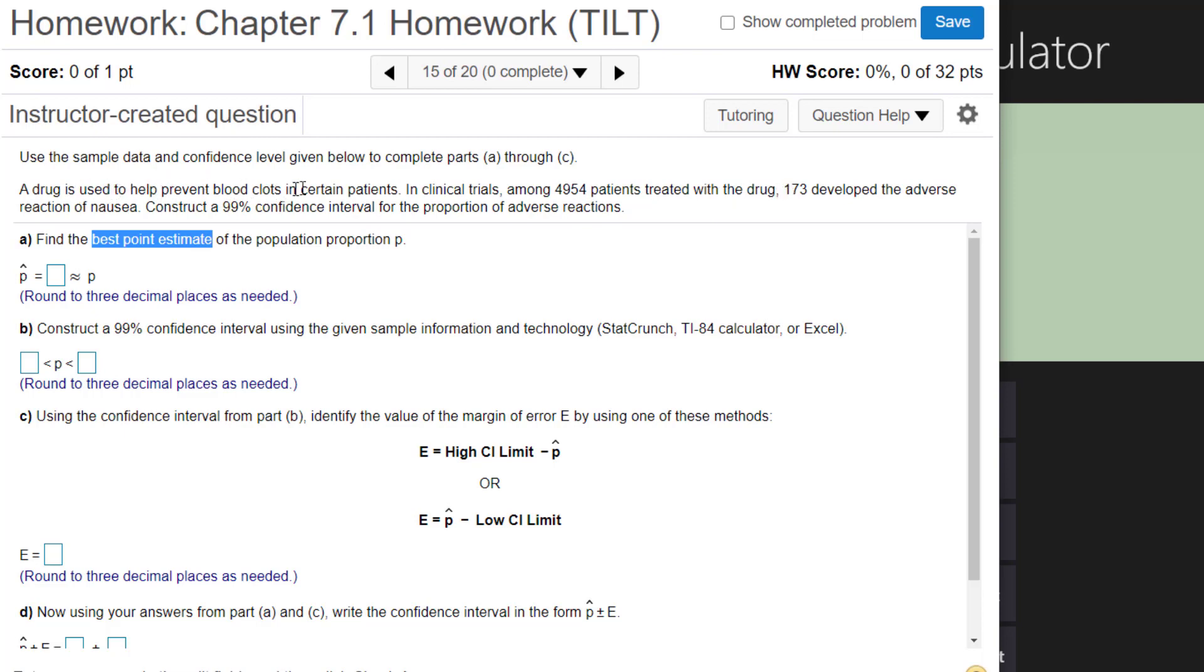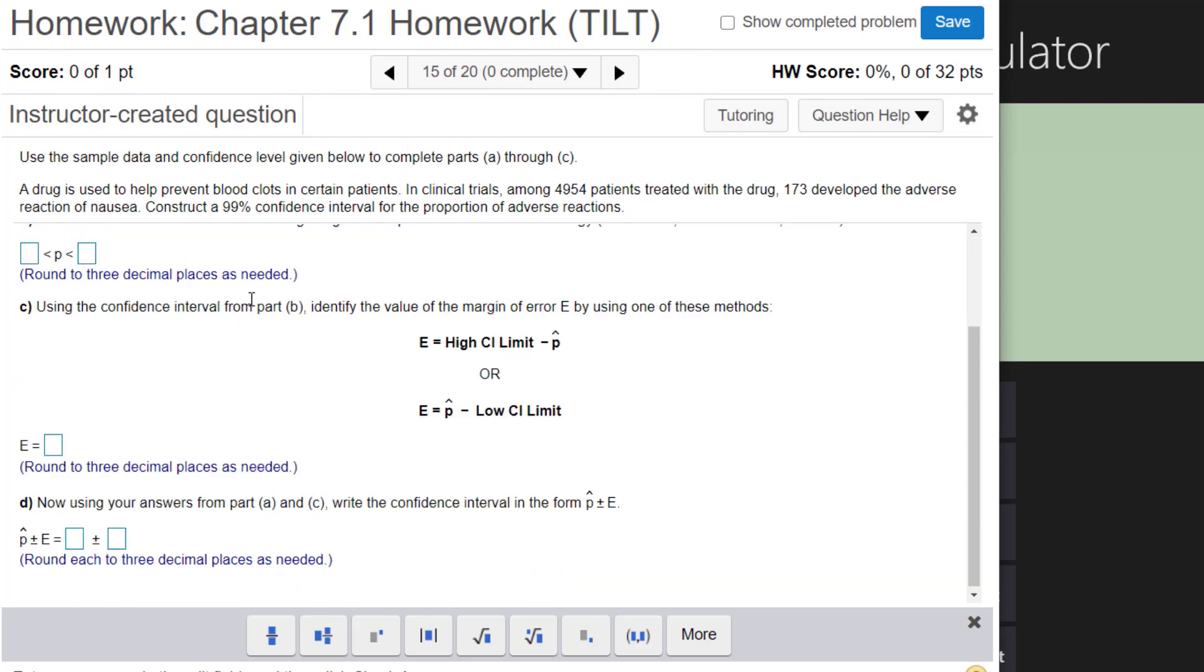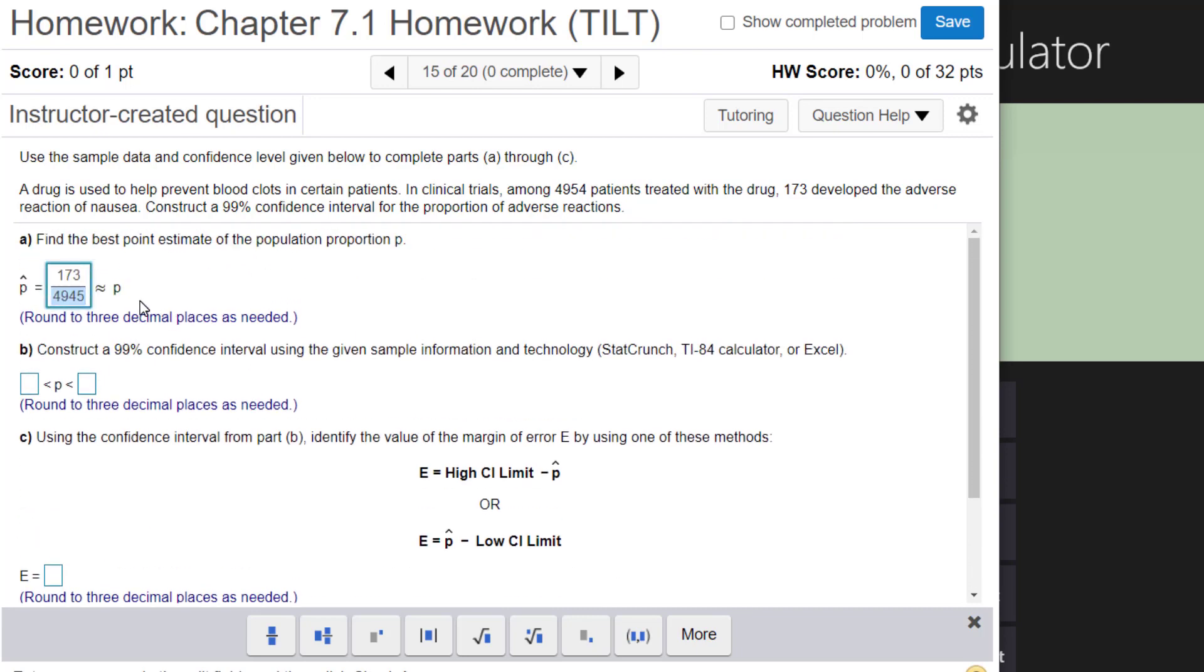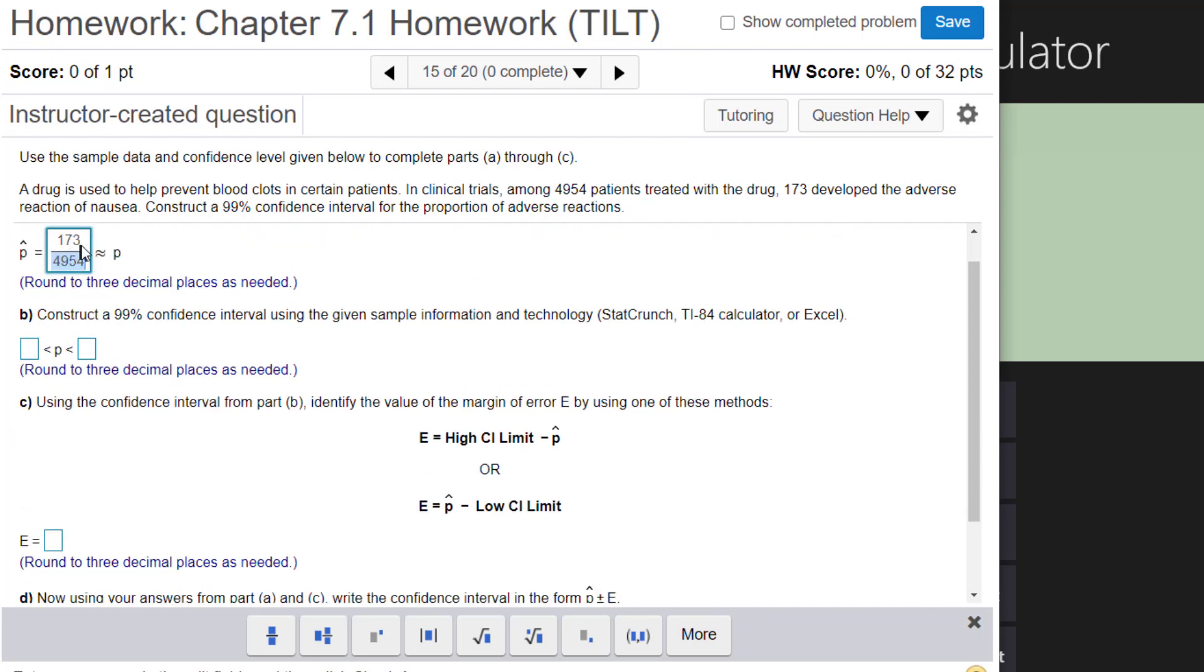So in this problem a drug is used to prevent blood clots in certain patients. In clinical trials among 4,954 patients, 173 developed adverse reactions of nausea. And then it says construct a 99% confidence interval for the proportion of adverse reactions. So we basically want to take for our P hat this will be the 173 divided by the 4,954 right here. Of course we do need to divide this out on our calculator but basically it's this fraction right here.